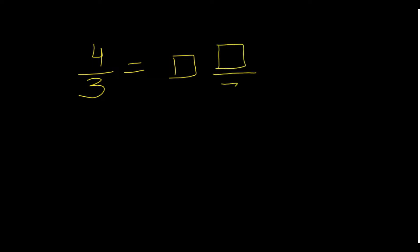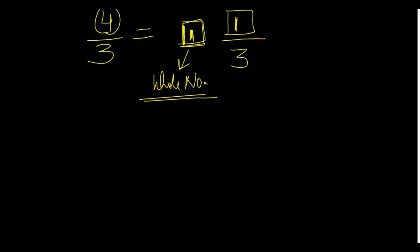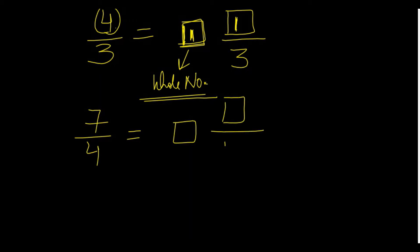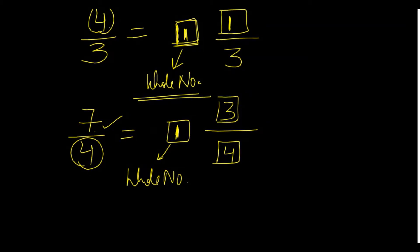Let's practice quickly. Four by three: how many threes fit in four? One — so whole number is one. Remainder is one. Answer: one and one-third. Seven by four: how many fours fit in seven? One — remainder is three, denominator is four. So the answer is one and three-fourths.